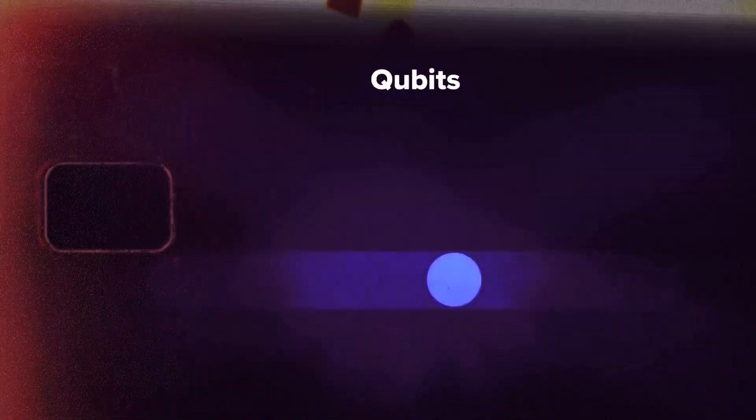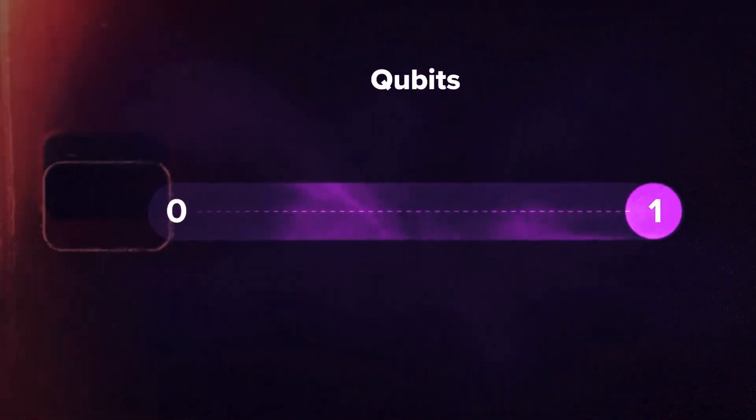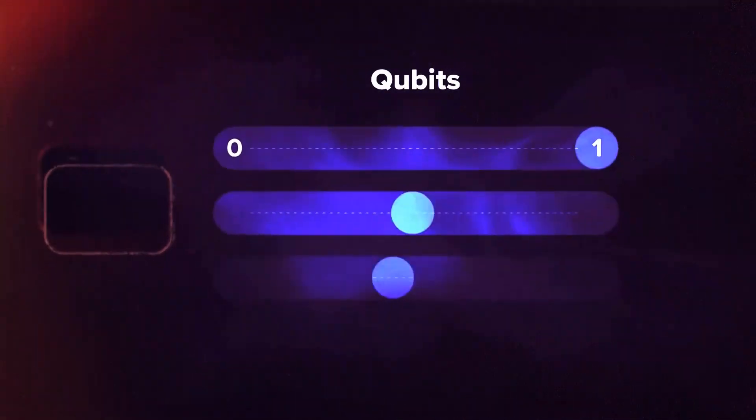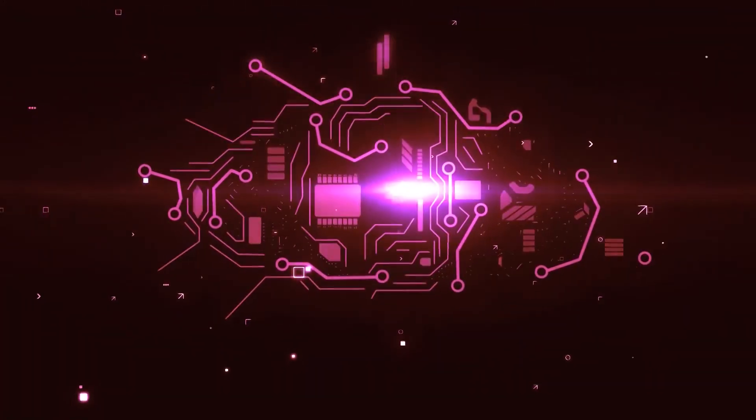In regular computers, we have bits that are like tiny switches. They can be on, one, or off, zero. In quantum computers, we use qubits that can be both on and off simultaneously. It's like magic. It can be one, zero, or both.